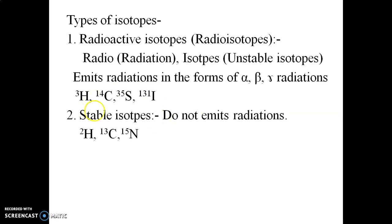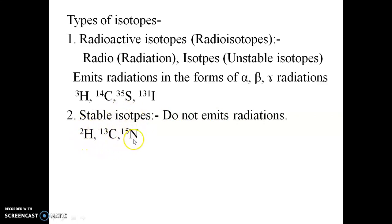Examples of radioactive isotopes include H3 (tritium). Examples of stable isotopes include H2, C13, and N15. So these are the two types of isotopes: radioactive (unstable) and stable.